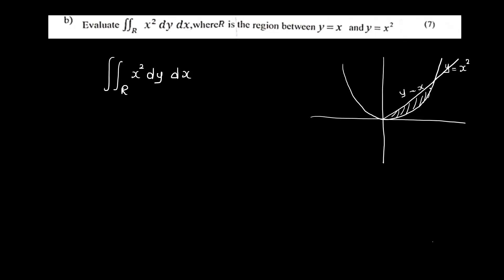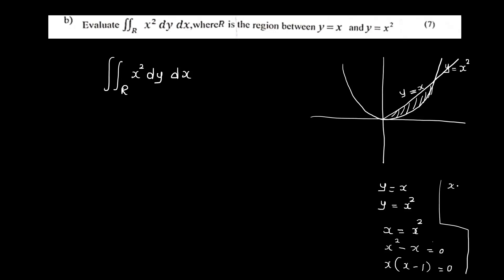This is the region, and you can see the range. You can see y = x and y = x² at the same location. To find the intersection, set x = x², which gives x² - x = 0, so x(x-1) = 0. Therefore x = 0 and x = 1.